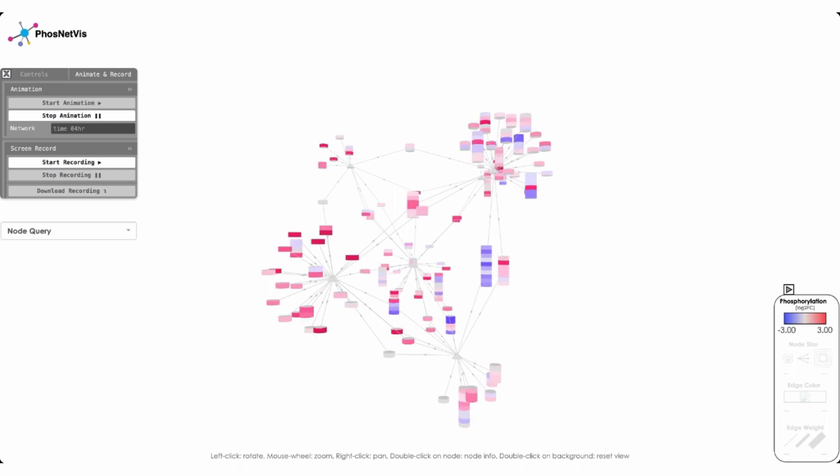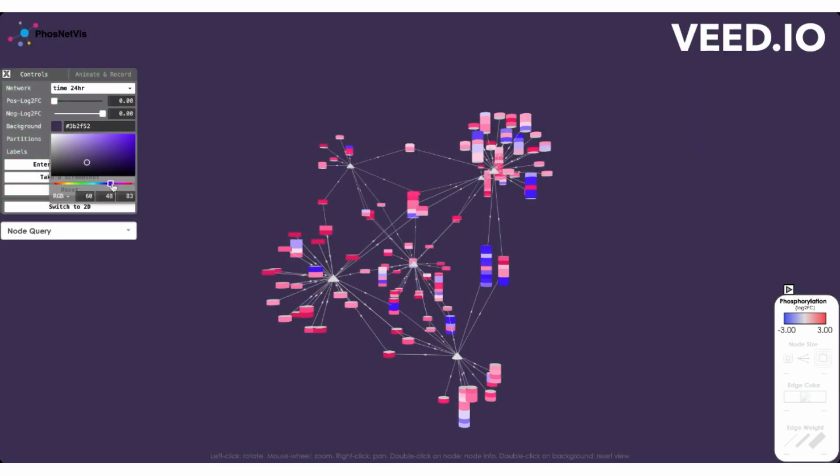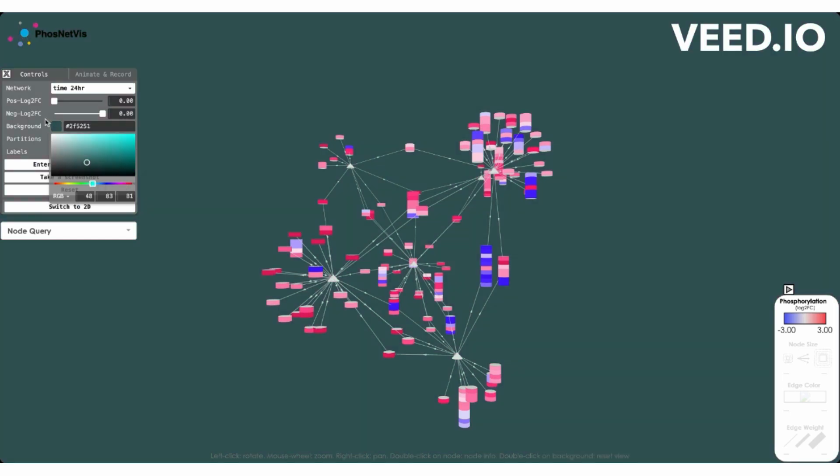So from time zero to time 24 hours, we can see that the phosphorylation levels are changing significantly. So we can stop the animation, record this, or take a screenshot. And if we go back to the original, we can also change the background based on the colored scheme that we like, which may work better for our specific purposes. And then also change the filters in terms of what is the specific cutoff for phosphorylation. And then also go back to resetting it.